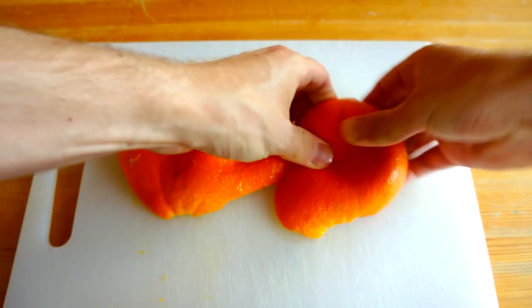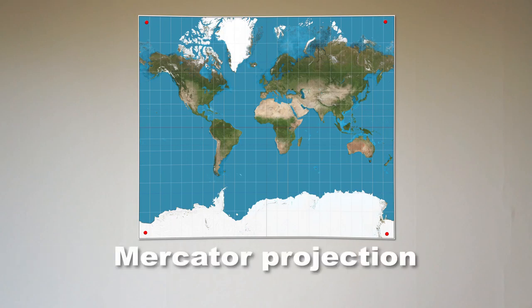And as with any other compromises you would have to do in life, there's some you can live with and some you just can't tolerate. When we look at world maps, the most common map projection is this one and it's called the Mercator projection. Map projections are just what we call the different ways to represent the world or a country.